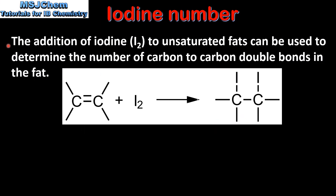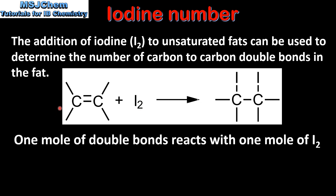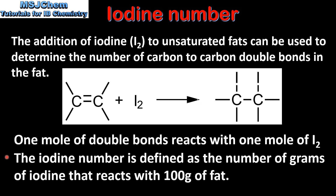The addition of iodine to unsaturated fats can be used to determine the number of carbon to carbon double bonds in the fat. Unsaturated fatty acids have carbon to carbon double bonds, and these undergo addition reactions with iodine. From this equation we can see that one mole of double bonds reacts with one mole of iodine. The iodine number is defined as the number of grams of iodine that reacts with 100 grams of fat.